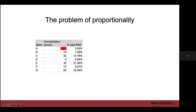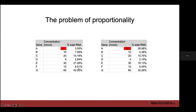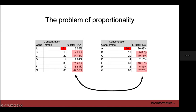However, this raises the proportionality problem. If we have a cell with seven genes making up certain percentages of total RNA, and we increase gene A by tenfold while keeping all others the same, yes, the percentage for gene A increases — but all the other genes appear to decrease when they haven't actually changed at all. So that's not ideal, and we need a solution.